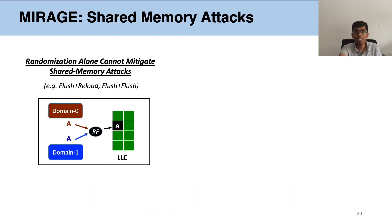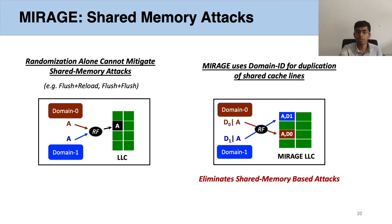Mirage also has protection against shared memory-based attacks like flush-reload or flush-flush, which exploit hits on addresses shared between a victim and a spy. Randomization alone cannot prevent such attacks, as addresses shared between security domains can have a single shared cache line on which cross-domain hits are observable. Mirage uses the domain ID as an input to the randomizing set index derivation function to ensure duplicate copies of shared addresses exist across domains by mapping these addresses to different cache sets for different domains with high probability. It also stores the domain ID along with the tag to ensure the cache line gets duplicated across domains even if they map to the same set, eliminating shared memory-based attacks.